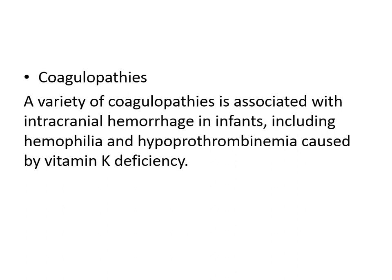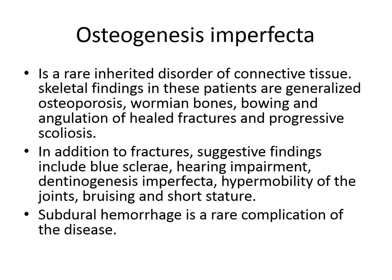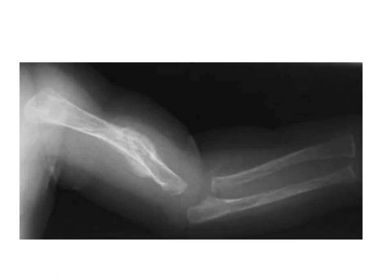Coagulopathies are a differential: a variety of coagulopathies are associated with intracranial hemorrhage in infants, including hemophilia or hypoprothrombinemia caused by vitamin K deficiency. Osteogenesis imperfecta is a connective tissue disease with multiple skeletal findings including generalized osteopenia, wormian bones, bowing, angulation, and liability to multiple fractures with minimal trauma. Other features not suggesting non-accidental injury include blue sclera, hearing impairment, hypermobility of joints, bruising, and short stature. Subdural hemorrhage is a real complication of the disease. On imaging, we see generalized decreased bone density and bowing with angulation and callus formation.